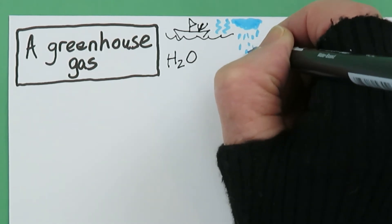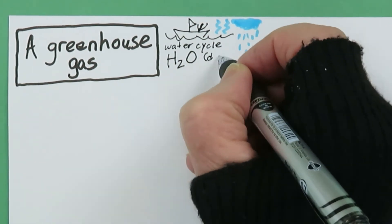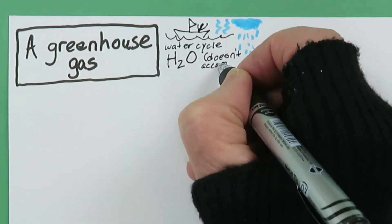It goes up as evaporation, forms a cloud as condensation, and falls down as precipitation. Yes, it does.